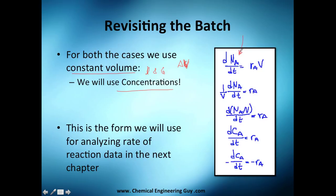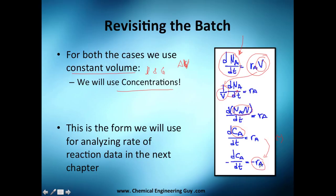Starting from the mole balance, accumulation equals generation: dN_A/dt = r_A · V. Moving V inside and dividing, moles over volume gives concentration, so we get dC_A/dt = r_A. Since we prefer to write the negative rate -r_A, this becomes dC_A/dt = -(-r_A). This equation is the one we'll use extensively in chapter five.